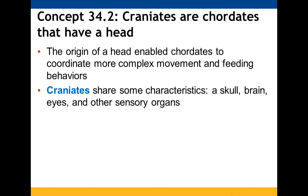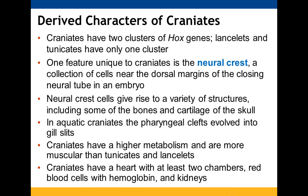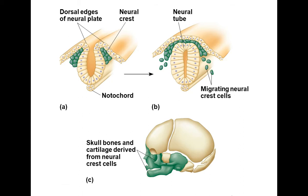Craniates are chordates that have a head. Craniates have two Hox gene clusters while lancelets have only one. This is because craniates have neural crest cells — cells near the margin of the neural tube that migrate and contribute many structures, including bones and cartilage of the skull. Aquatic craniates have a higher metabolism, a muscular system, two-chambered hearts, white blood cells with hemoglobin, and kidney cells.